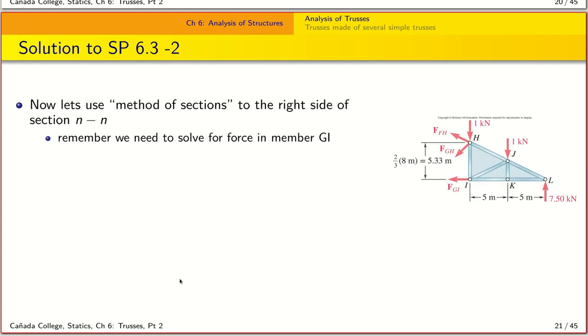Now we come to step two in the method of sections. This is our free body diagram for the right hand side and you can see we have three unknowns: GI, GH, and FH. The question here is, can you write down one equilibrium equation that gives us this force FGI? Pause the video here and think through it and then come back to check the answer.